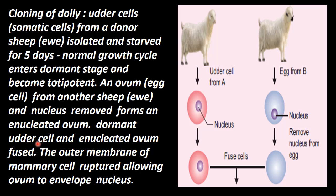This dormant udder cell and the enucleated ovum are fused together. The outer membrane of the mammary cell is ruptured, allowing the ovum to envelop the nucleus. So the somatic nucleus is now inside the ovum.